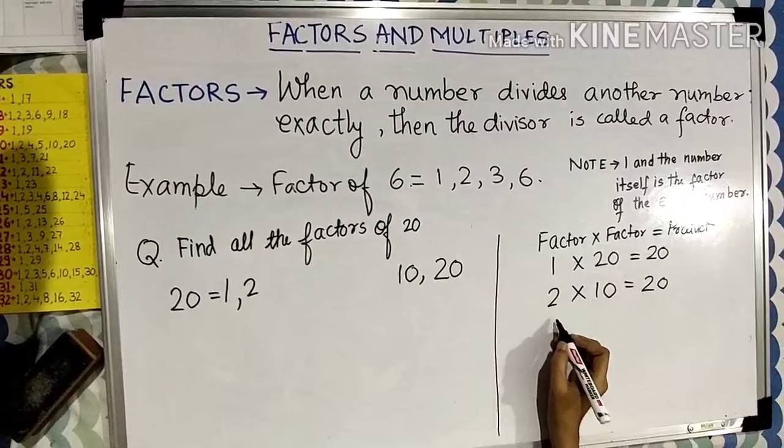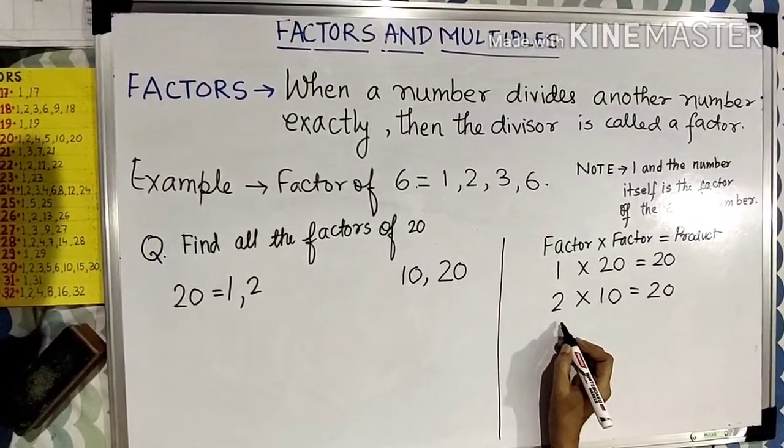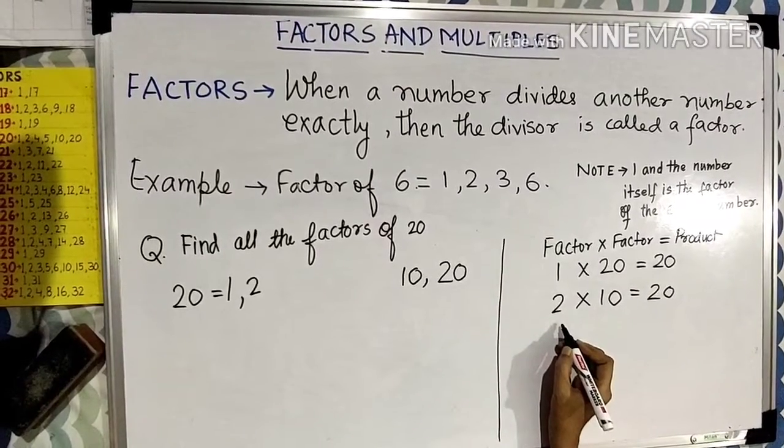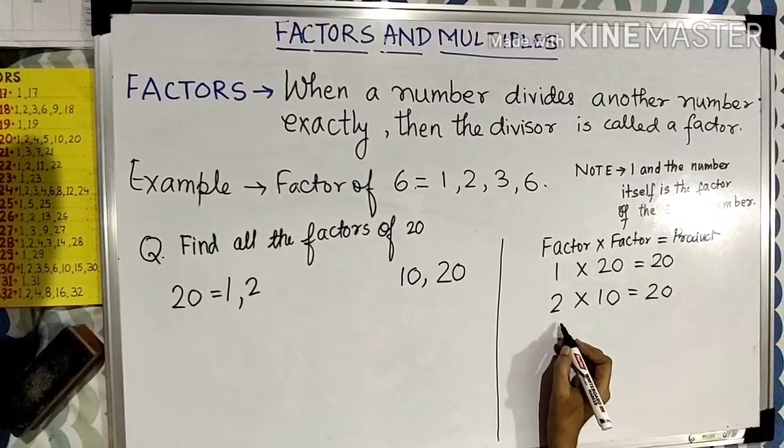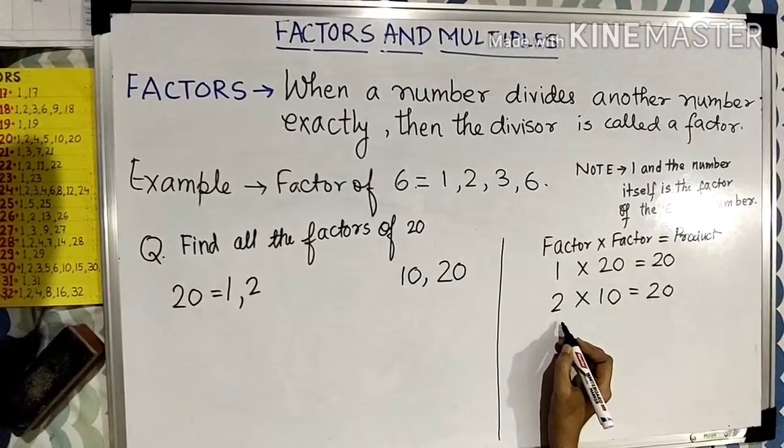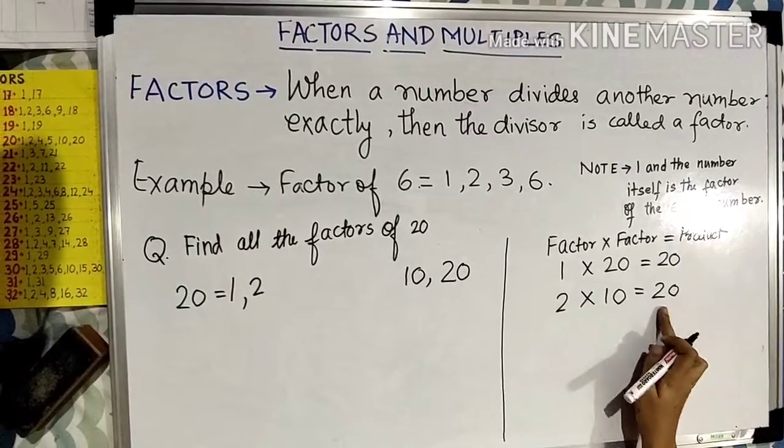Now let us see for 3. Since 3 1s are 3, 3 2s are 6, 3 3s are 9, 3 4s are 12, 3 5s are 15, 3 6s are 18, 3 7s are 21. So in table of 3, you will not get 20.